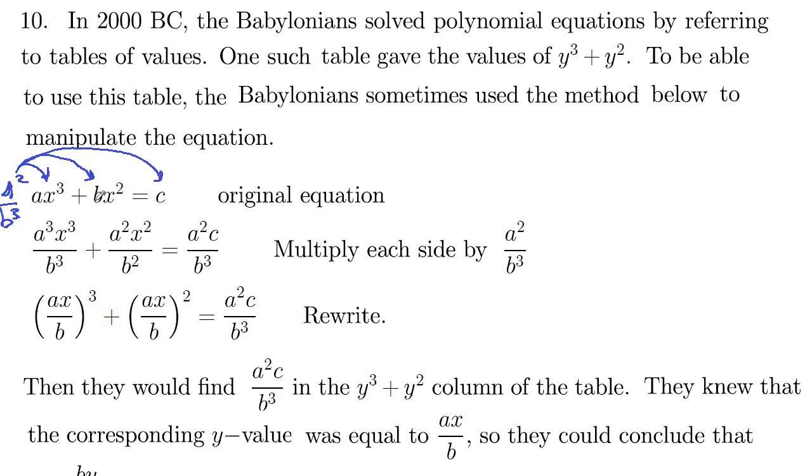So a squared b x squared, and then on the bottom b cubed. One of these b's will cancel that b out, so we're left with a squared x squared on top and just b squared on the bottom. And then a squared over b cubed times c, a squared c over b cubed. So that's just multiplying through.